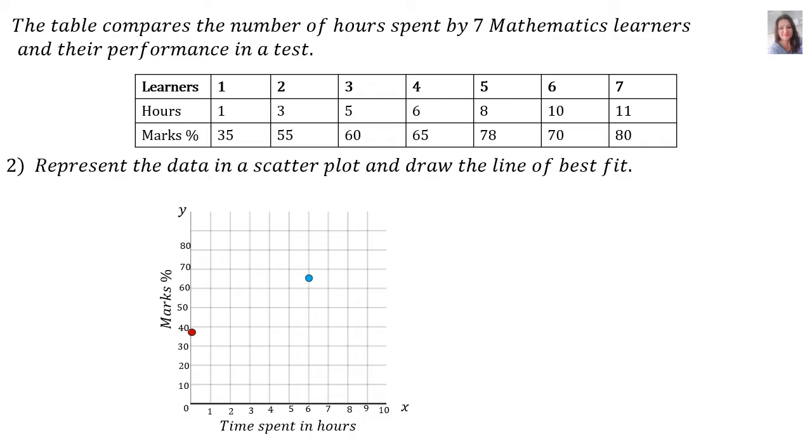Now, we can do number 2, represent the data in a scatter plot and draw the line of best fit. Already there you can see the red dot, that's your y-intercept, the 38 comma something. And then, the blue dot is your mean point. Let's plot the graph quickly. The first coordinate will be the point 1, 35, then 3, 55, then 5, 60, then 6, 65, then 8, 78, then 10, 70, then 11, 80. And then, in flew the equation of the least squares regression line. There's the mean point 6.28 and 63.28. All we have to do is to join the mean point and the y-intercept. And there's your line of best fit.